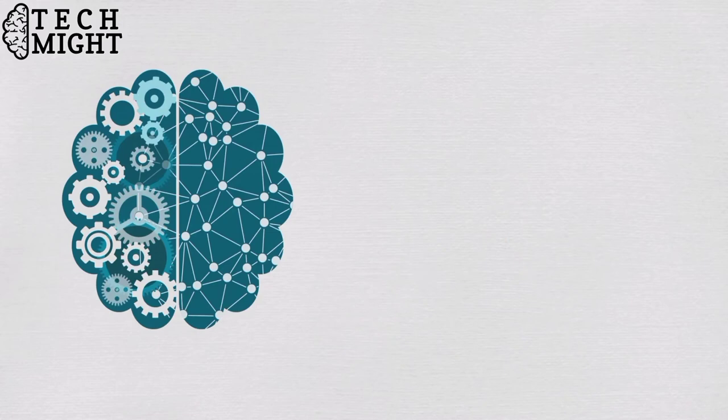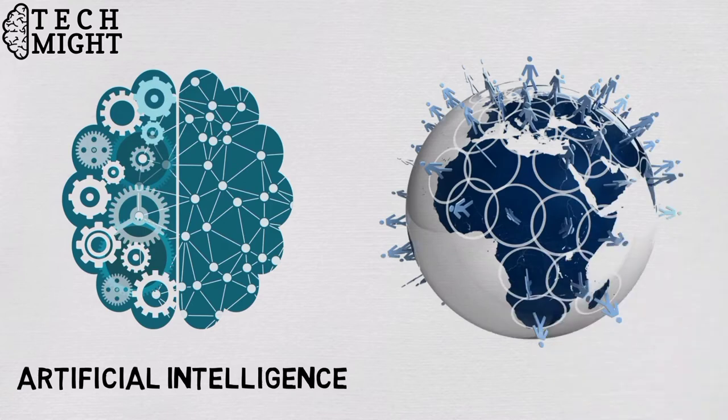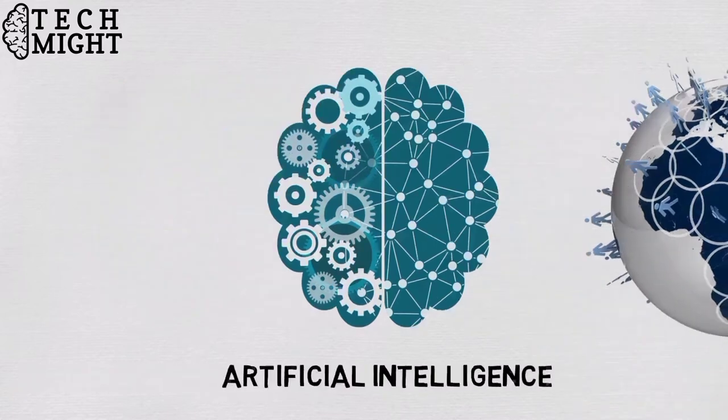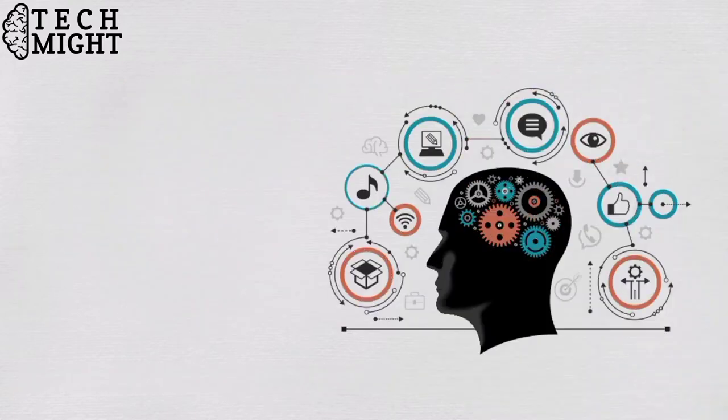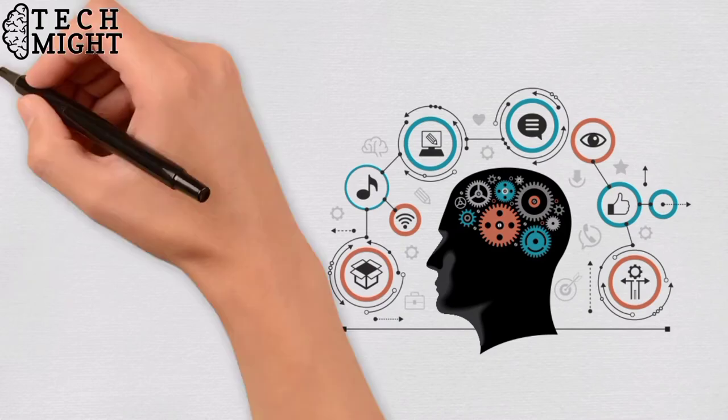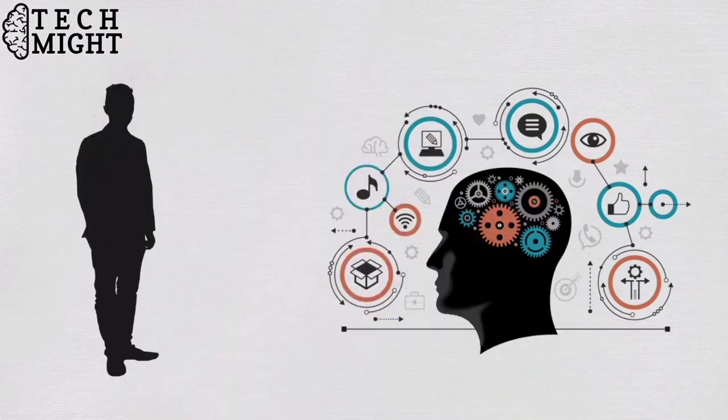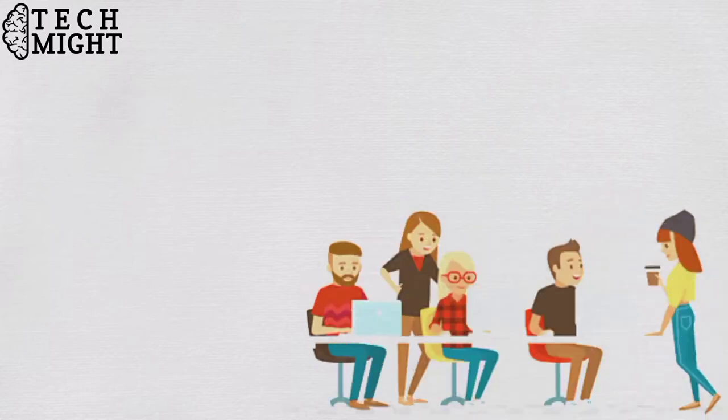Let's start with the definition. The intelligence demonstrated by machines is known as artificial intelligence. Artificial intelligence has grown to be very popular in today's world. It is the simulation of natural intelligence in machines that are programmed to learn and mimic the actions of humans. These machines are able to learn with experience and perform human-like tasks.